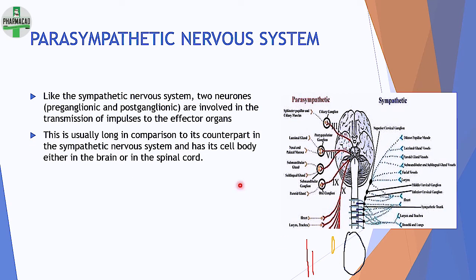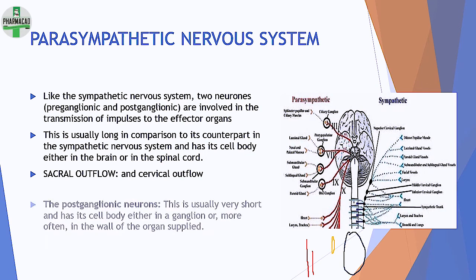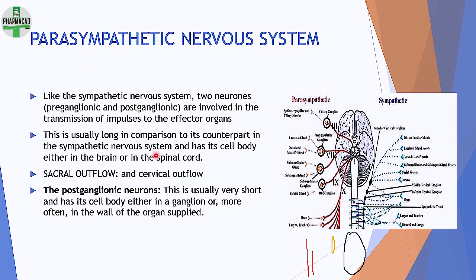From this, using common sense: in parasympathetic, the pre-ganglionic fibers will be longer and the post-ganglionic fibers will be shorter, in comparison to sympathetic. The pre-ganglionic fiber is usually long, with its cell body either in the brain or spinal cord. The post-ganglionic fibers are usually very short with their cell body in the ganglion or in the wall of the organ supplied.